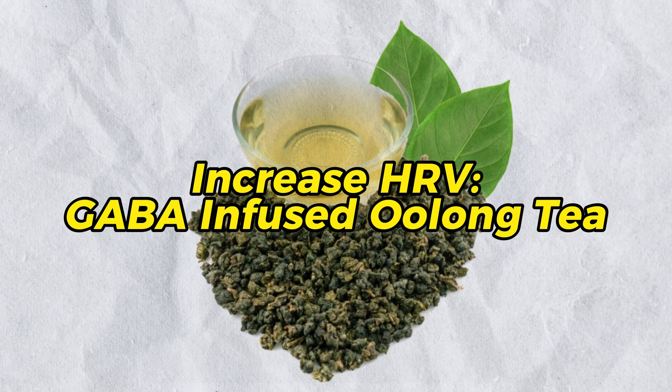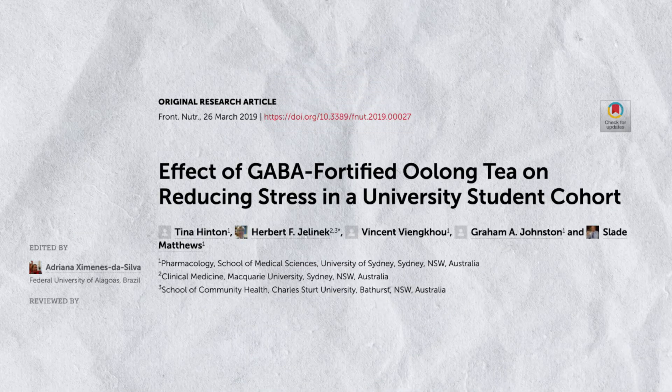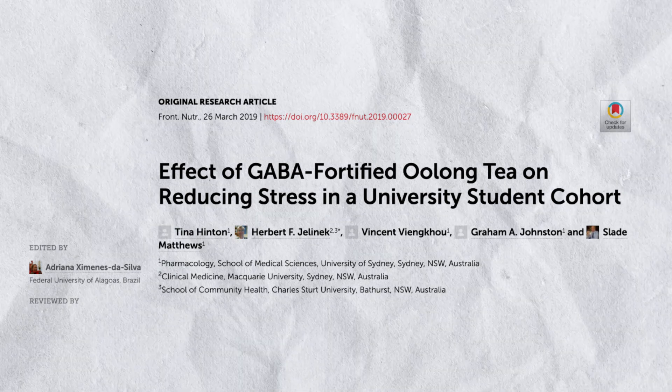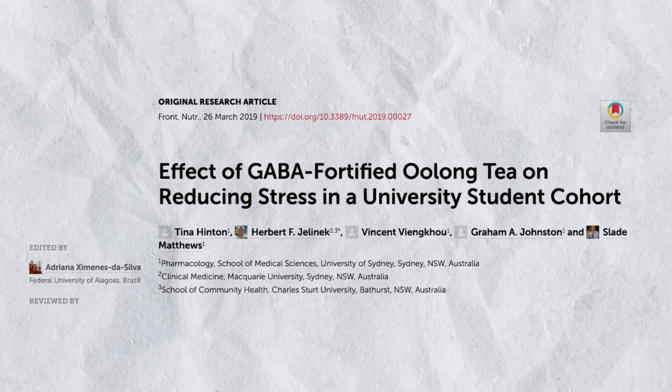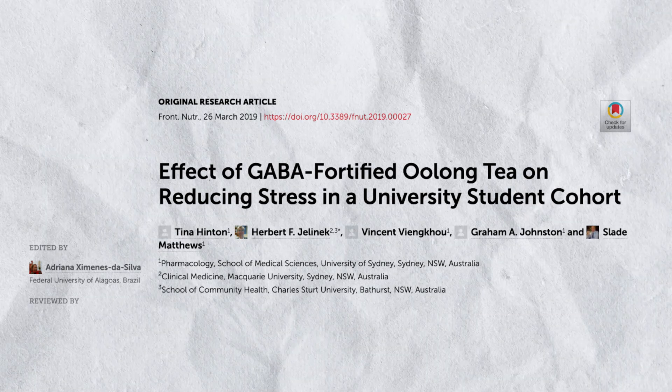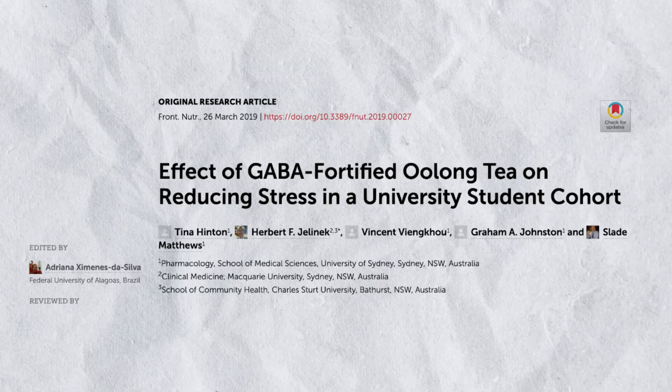Finally, GABA-infused Oolong tea. A study on the effect of GABA-fortified Oolong tea on reducing stress in a university cohort showed it helped reduce stress and improve heart rate variability. That wraps up today's video on how to boost your heart rate variability. If you liked this video, please like and subscribe to stay up to date with the latest health research.